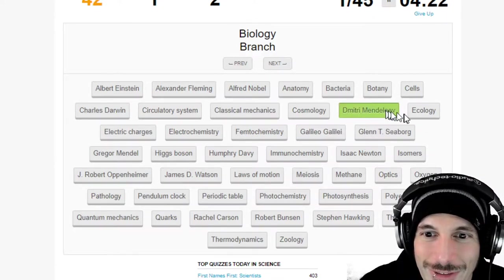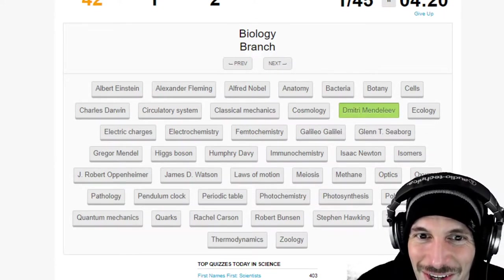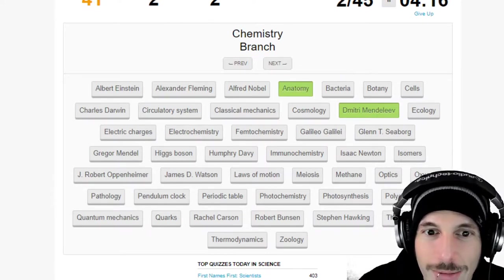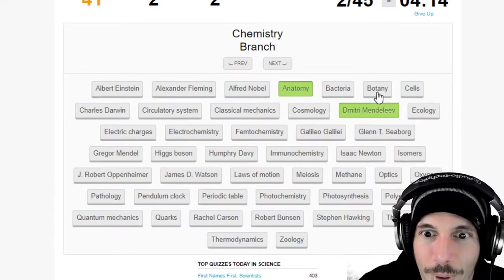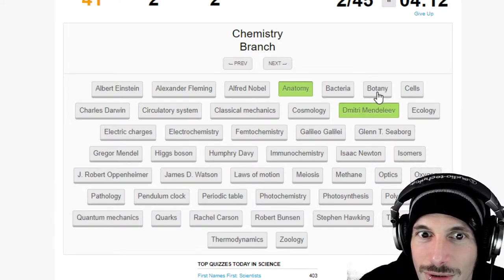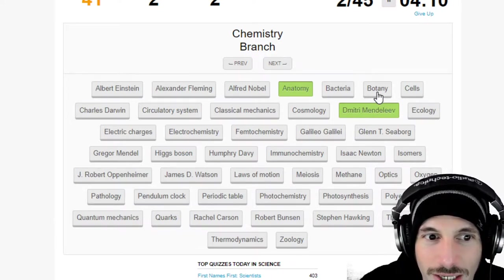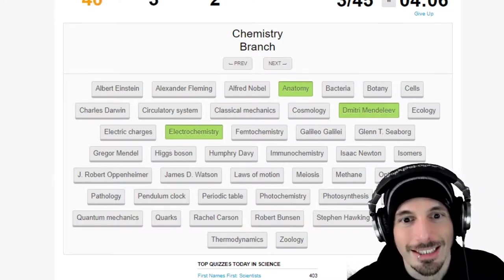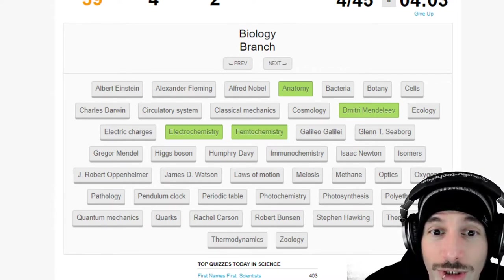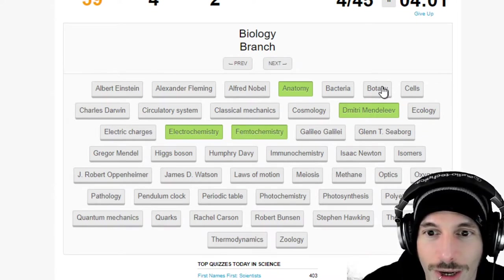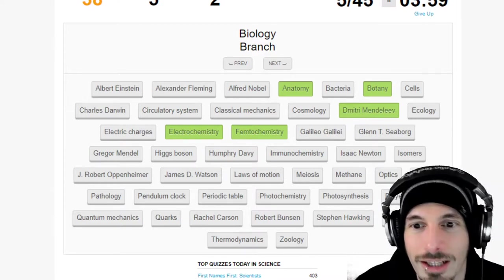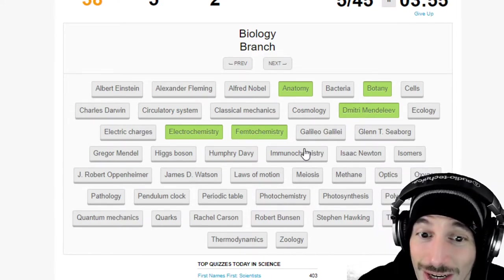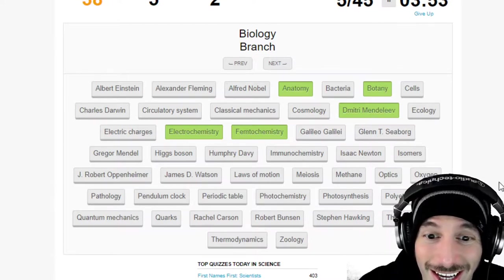Mental health, nice. Biology branch, biology anatomy, nice. Chemistry branch, botany chemistry no it's probably biology right. Electrochemistry nice. Another chemistry branch, femtochemistry, nice. Biology branch, so biology should be botany right, nice.